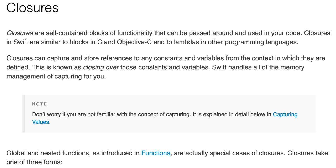Closures are self-containing blocks of functionality that can be passed around and used in your code. Closures in Swift are similar to blocks in C and Objective-C and to lambdas in other programming languages. Closures can capture and store references to any constants and variables from the context in which they are defined. This is known as closing over constants and variables. Swift handles all of the memory management of capturing for you.